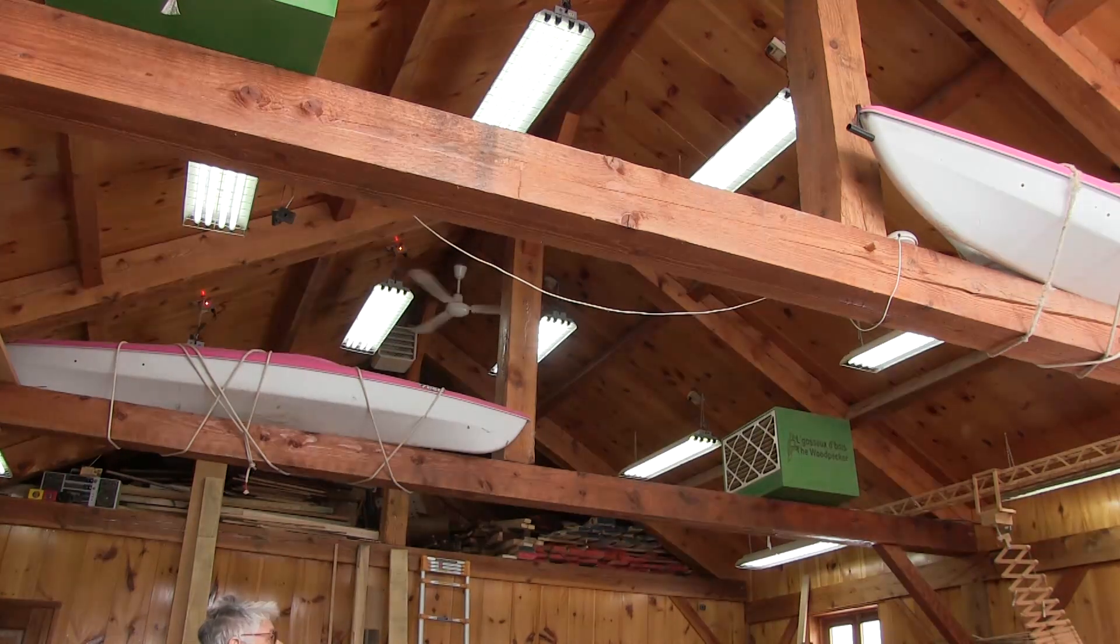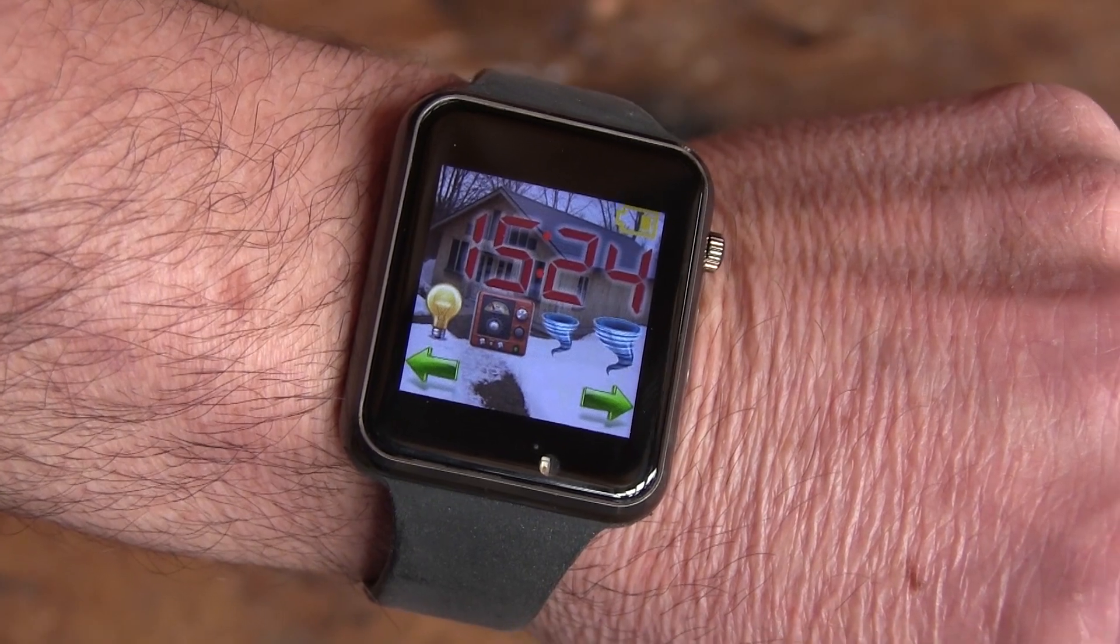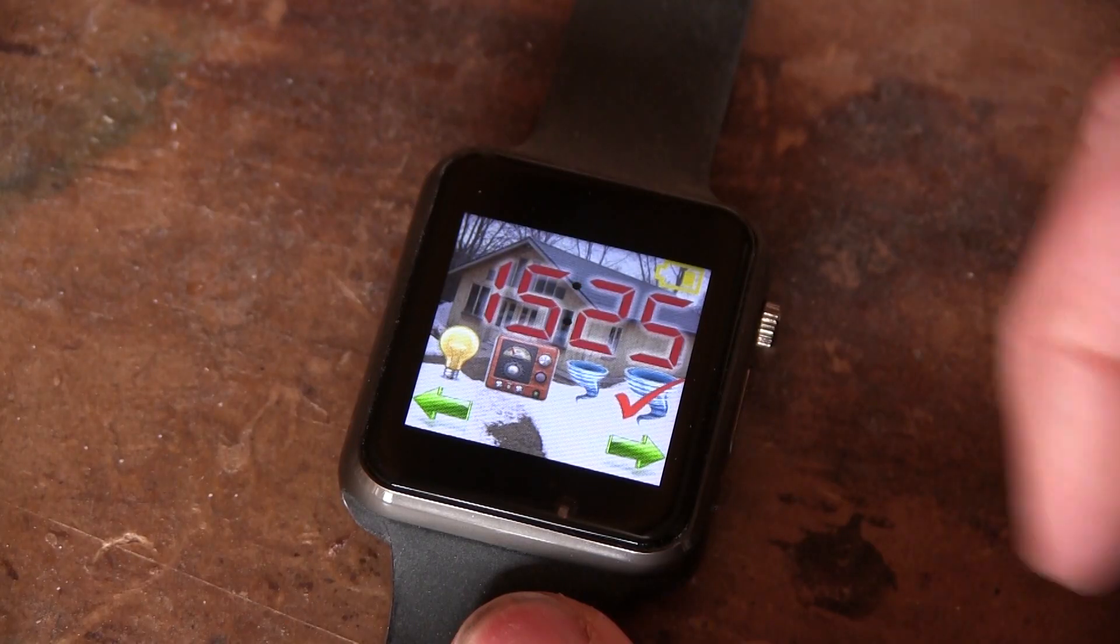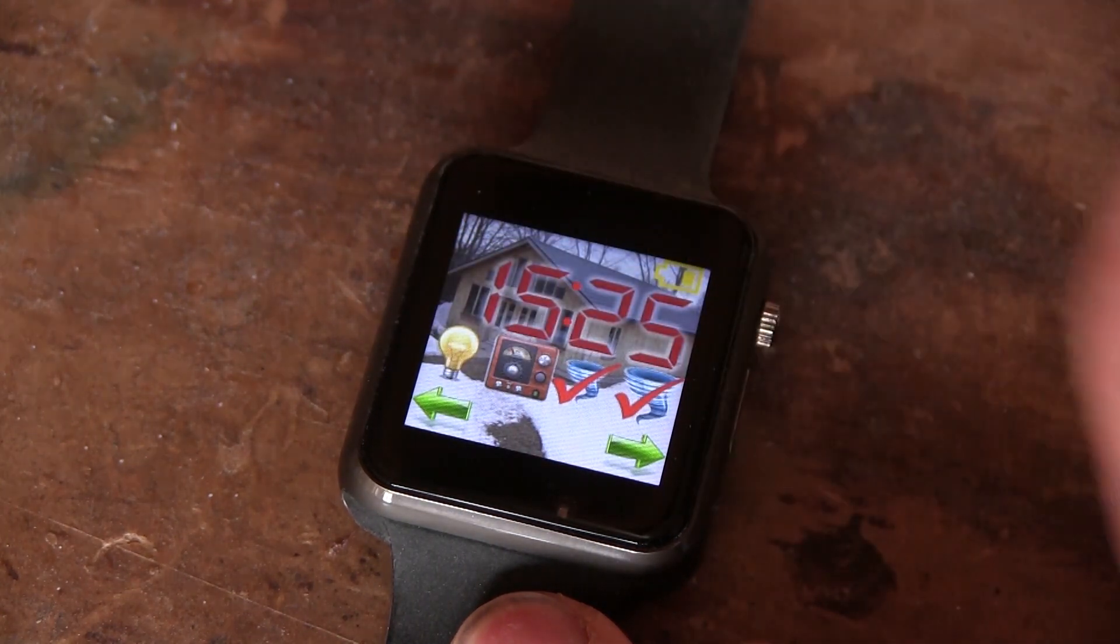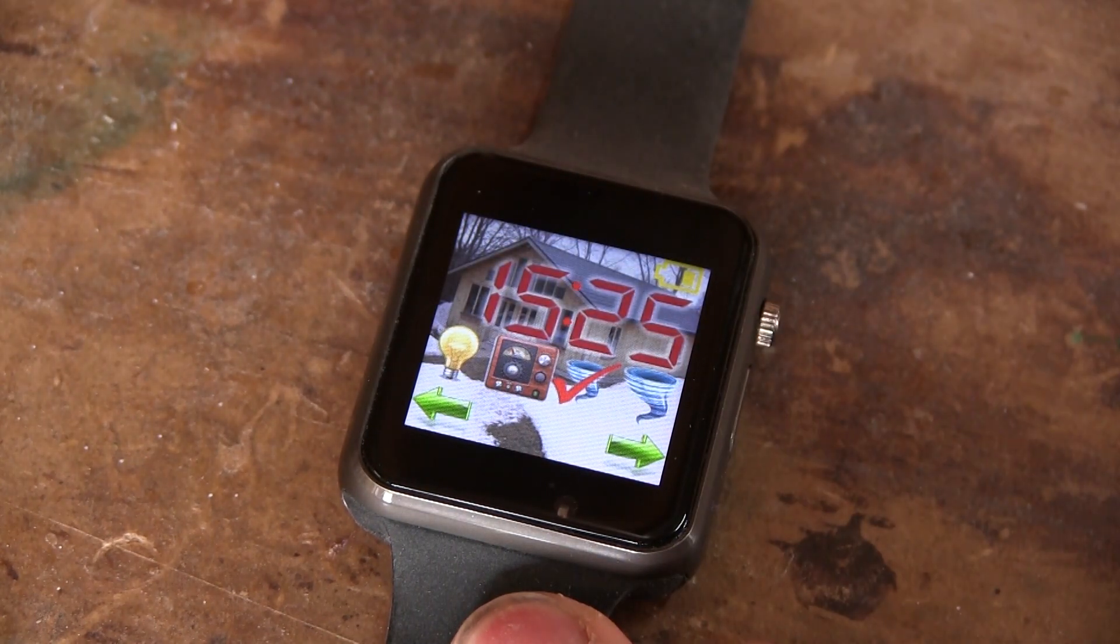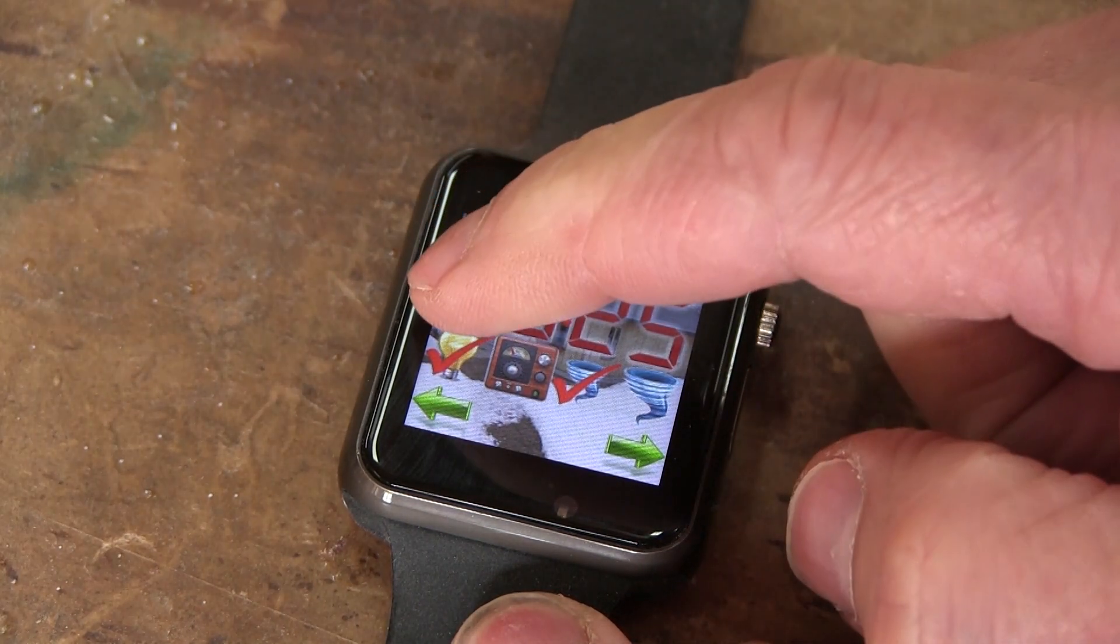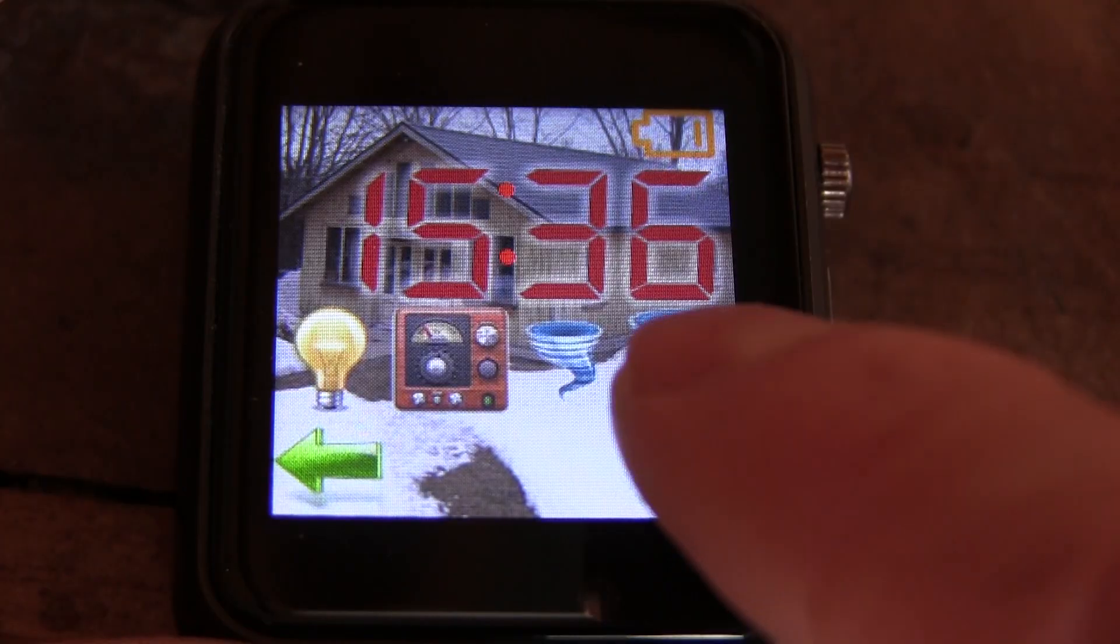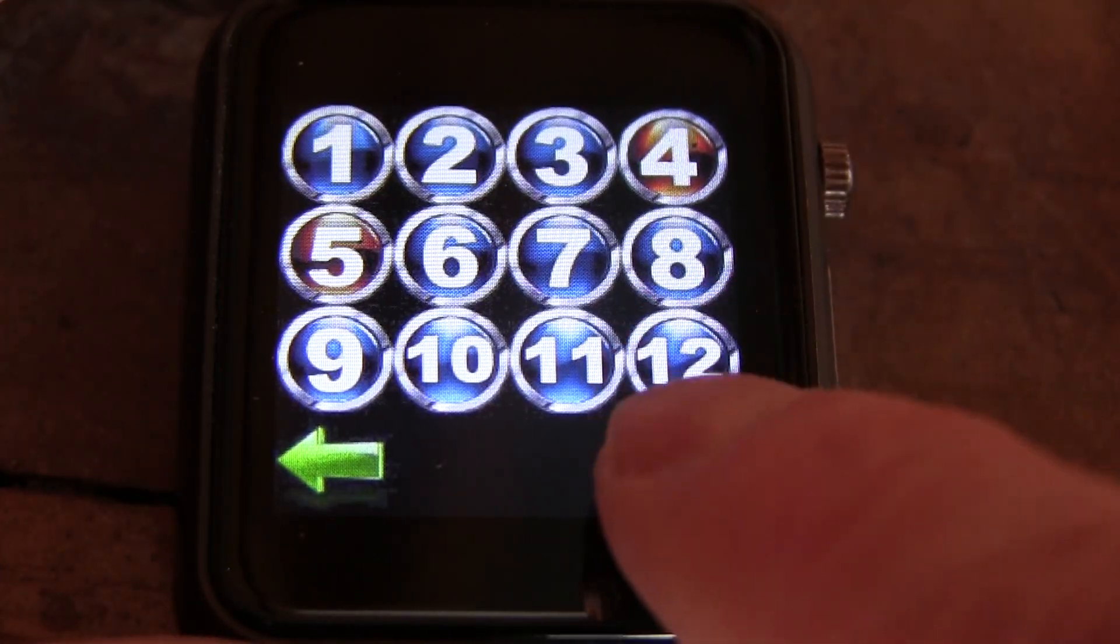But I wanted even more. So I bought this programmable watch to control my modules at the end of my wrist. On the main display, I can start or stop four of the things that I use the most. The lights, the radio and both vacuums. I also have more screens where I can control each outlet individually.